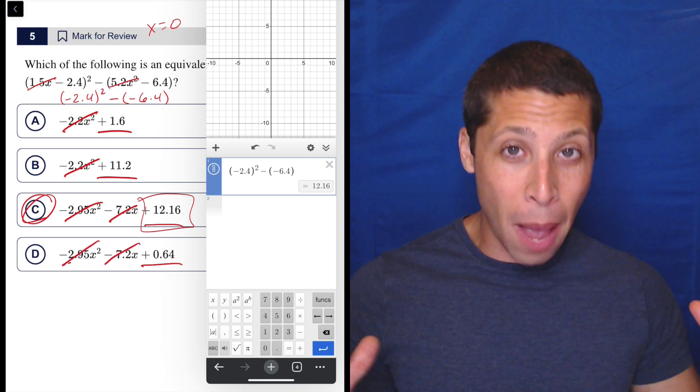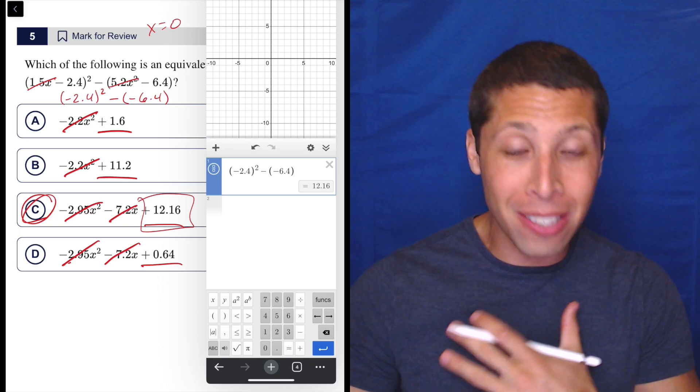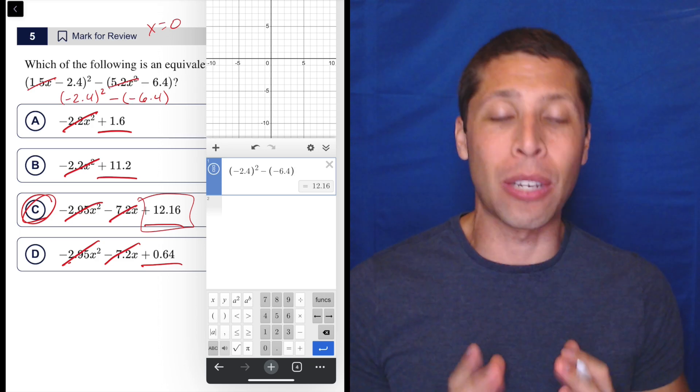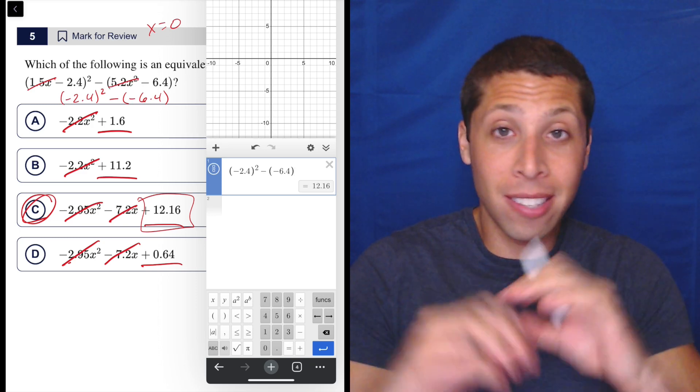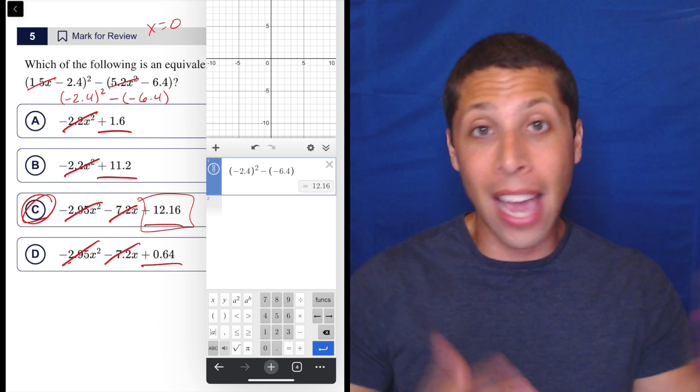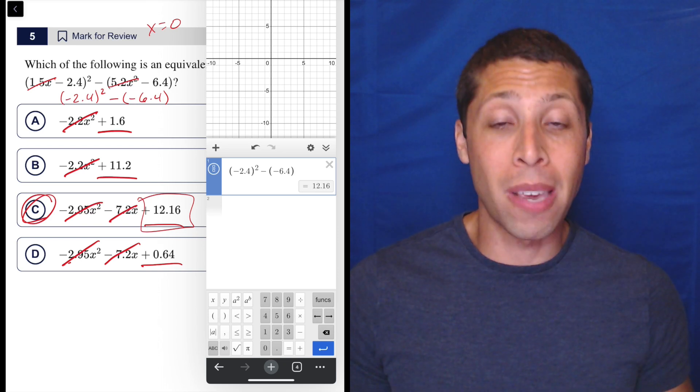So that won't always happen. You got to pay attention. If we have exponents where the x is the exponent, that's going to behave a little bit differently. But for questions like this, where the x is kind of the base of anything, this is really easy. We can very quickly knock out lots of terms just by making x zero.